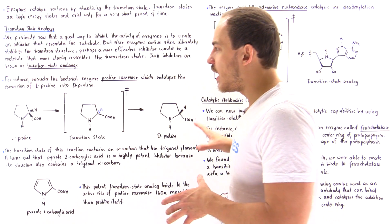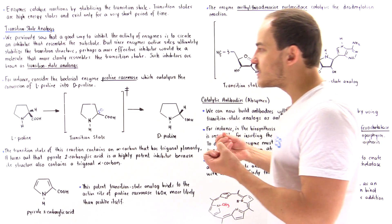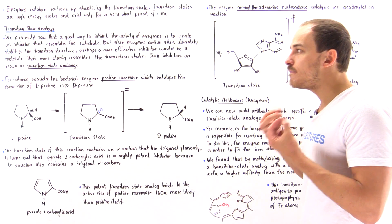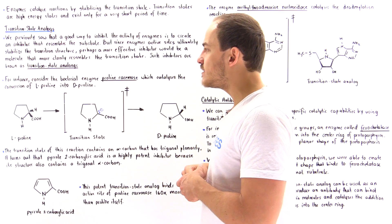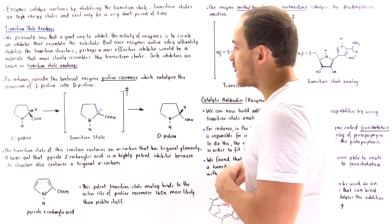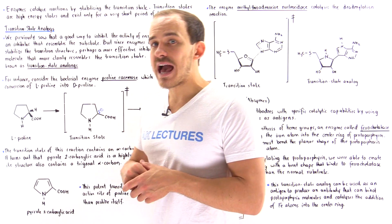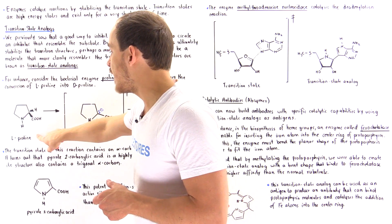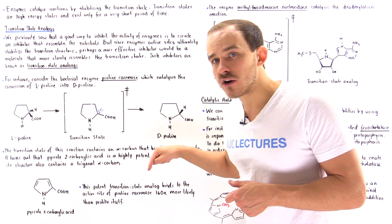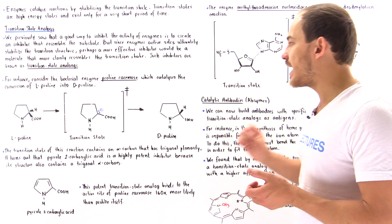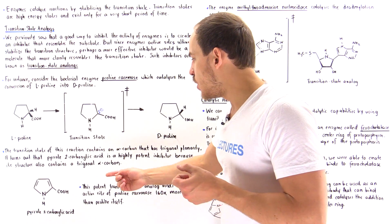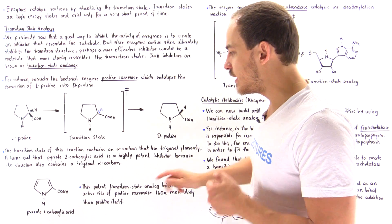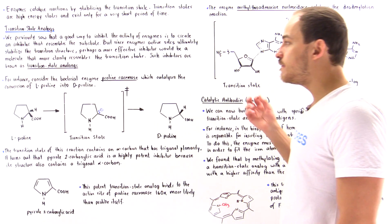From this discussion, if we can build a molecule that is a transition state analog resembling the structure of this particular transition state, then that transition state analog will be a very potent inhibitor of proline racemase, because it will accommodate quite easily into the active site of that enzyme. The transition state of the isomerization of L-proline to D-proline contains an alpha carbon that is trigonal planar. It turns out that pyrrole-2-carboxylic acid, which also contains trigonal planarity on that carbon, will be a very potent inhibitor.